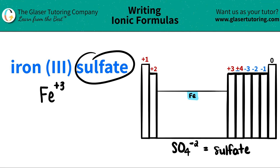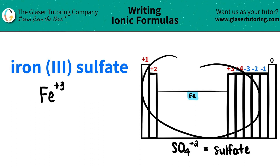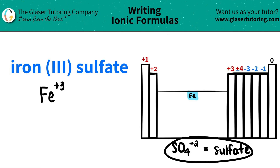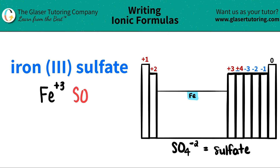Now the next thing I have is sulfate. I see that it's an ATE ending, and all ATE endings are always polyatomic ions — you will never find them on the periodic table. Polyatomics have to be memorized. Use flashcards or do whatever you need to memorize that sulfate is SO4 with a negative 2 charge.